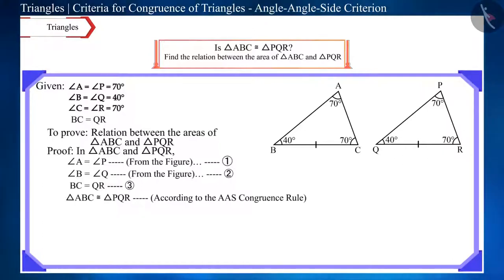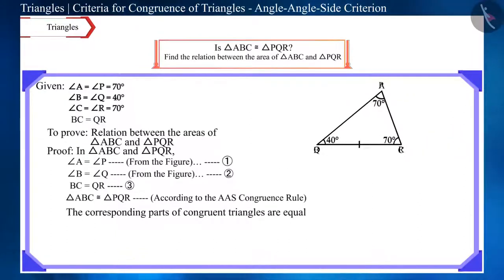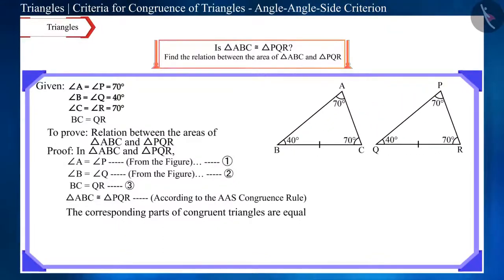Friends, we know that corresponding parts of congruent triangles are equal. That is, these two triangles will overlap each other completely. Now we can say that these two triangles occupy the same space, so their area will be equal. We can write it in this way.